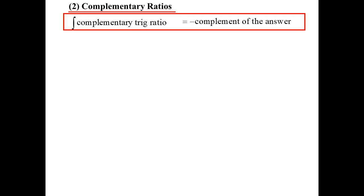Complementary ratios. Here's the thing. Once you know how to integrate a trig ratio, you know how to integrate its complement. Because it's basically this: if you integrate a complementary trig ratio, then the answer should be the negative, the complement of the answer.